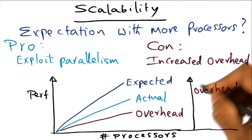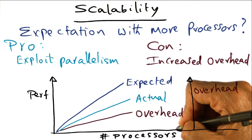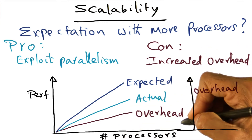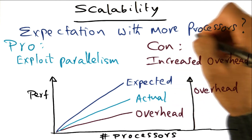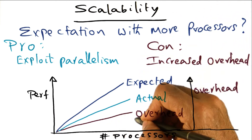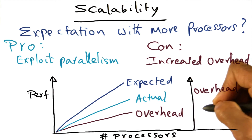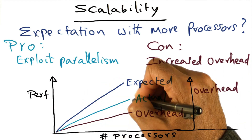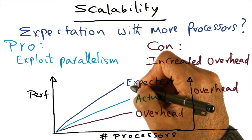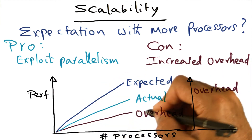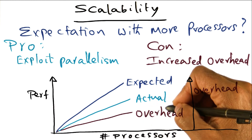But the problem is, as you increase the number of processors, because things are happening in software, there is increased overhead as well. This overhead increases with the number of processors, so the actual performance is going to be much less than your expectation, mitigated by the increasing overhead with the number of processors.